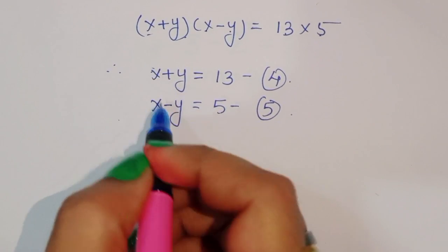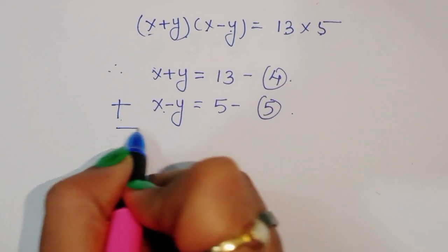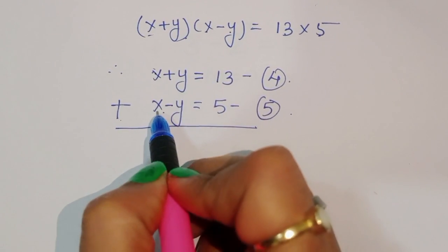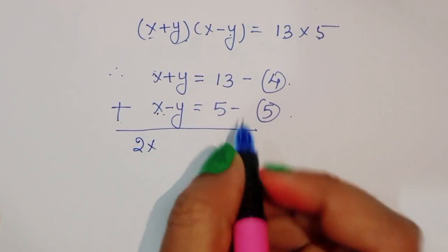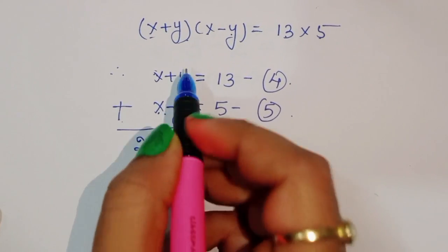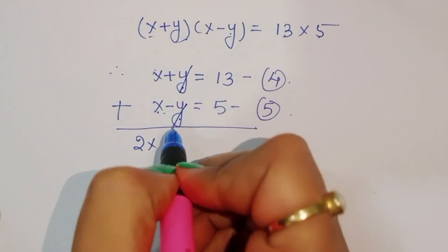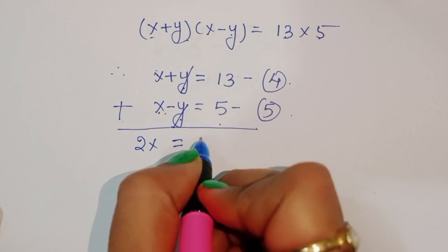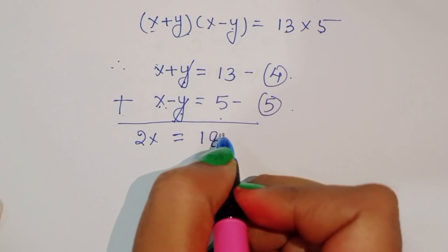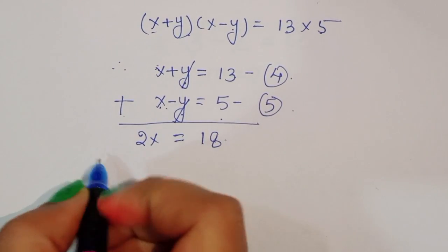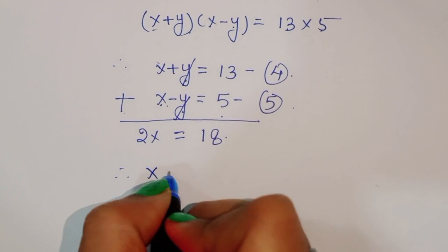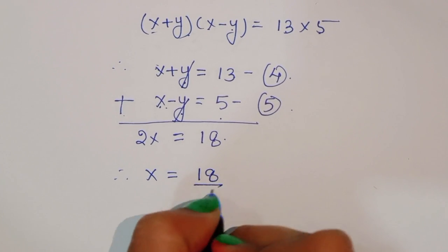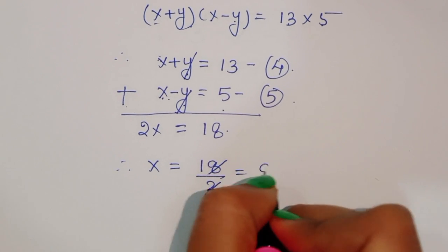Now when we add equations 4 and 5: x plus x, that is 2x, plus y minus y — this will cancel — so 2x is equal to 13 plus 5, that is 18. Therefore x is equal to 18 divided by 2, which is equal to 9. So x is equal to 9.